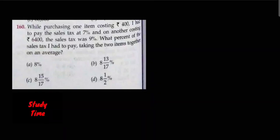Question number 160: While purchasing one item costing 400, I had to pay the sales tax at 7%, and on another costing 6400, the sales tax was 9%. What percent of the sales tax I had to pay taking the two items together on an average?